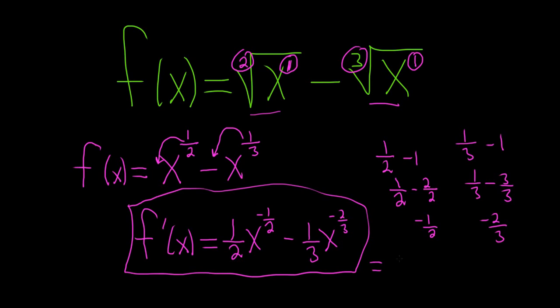If you wanted to, you could do 1 half times 1 over x to the 1 half minus 1 third, 1 over x to the 2 thirds. You could even combine it and write it like this: 1 over 2x to the 1 half, if you really wanted to, minus 1 over 3x to the 2 thirds.